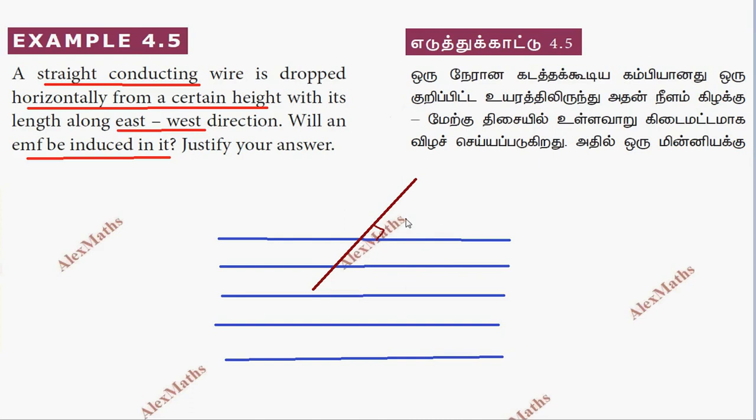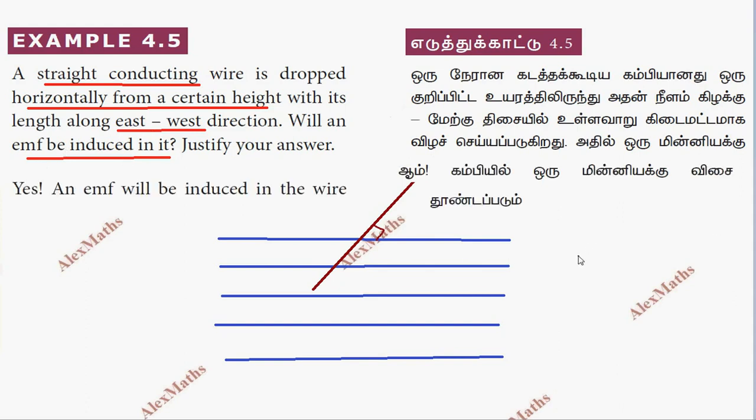In the straight conducting wire, along the direction of north-south, the flux lines are cut. So, this is the perpendicular direction. This is the EMF. EMF will be induced in the wire.